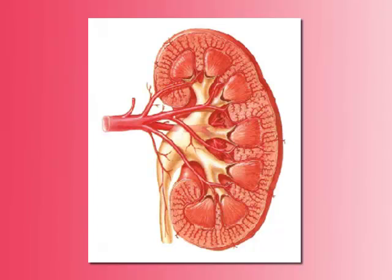Inside the kidney there is the minor calyx, the major calyx, and the renal pelvis. Outside the kidney we have the tip of the renal pelvis, the ureter, the urinary bladder, and the urethra.